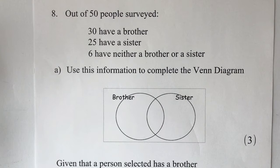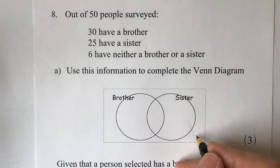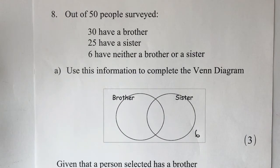So out of 50 people surveyed, 30 have a brother, 25 have a sister, and 6 have neither a brother nor a sister. That bit is easy — we can say those 6 people are outside the scope of the actual circles themselves.